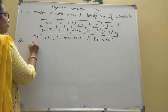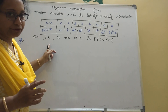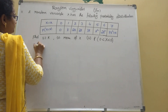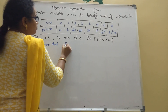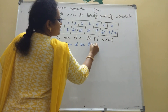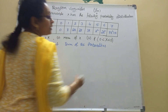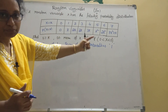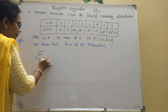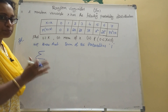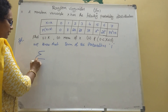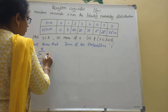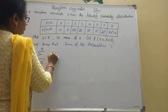First, write the given part. We know that the sum of probabilities equals one. That is the key formula. So sigma from i equal to zero to seven of p(x equal to xi) equals one.